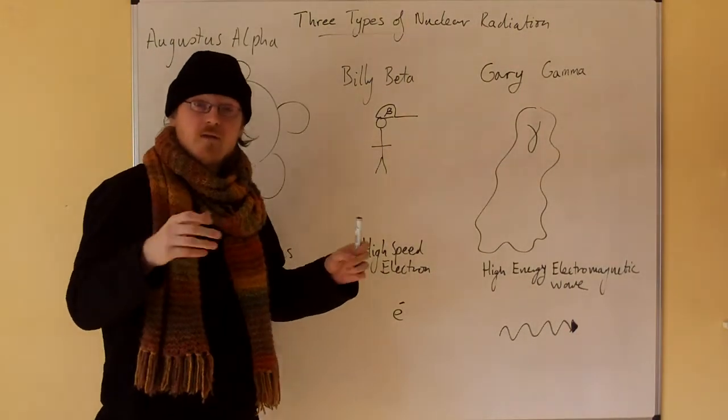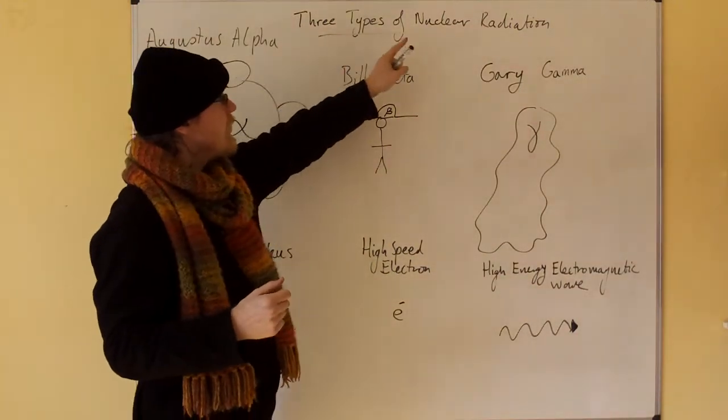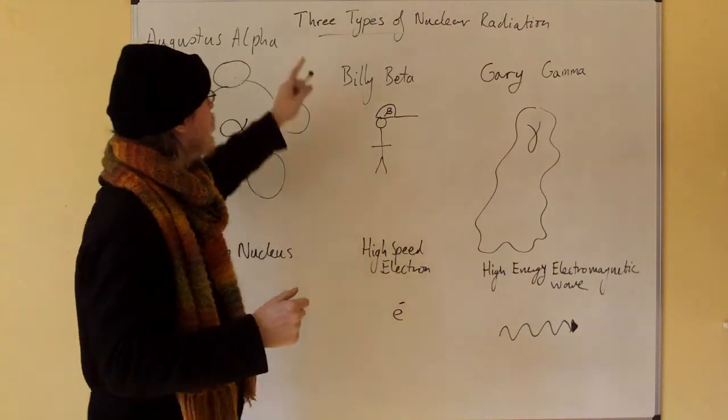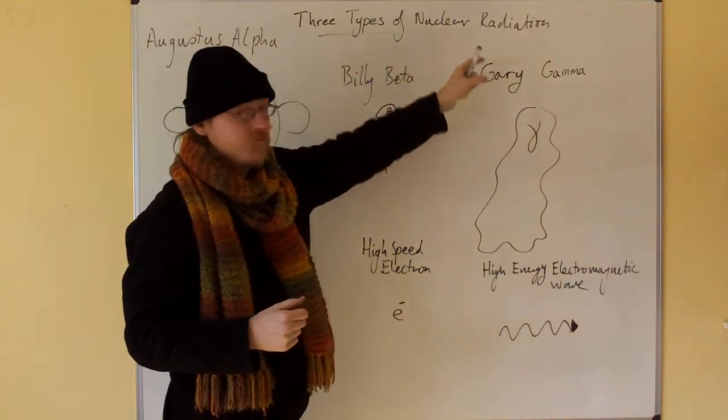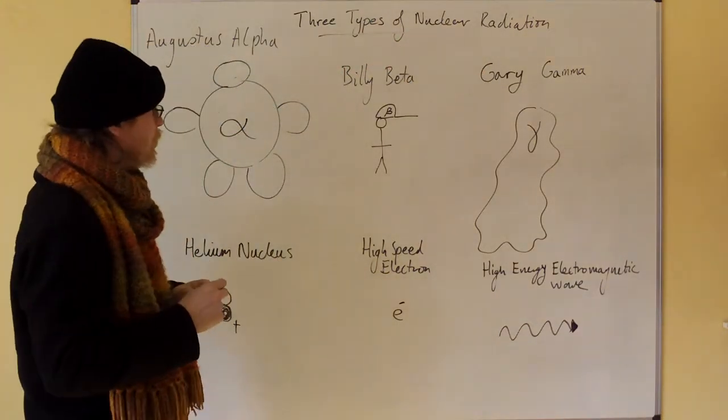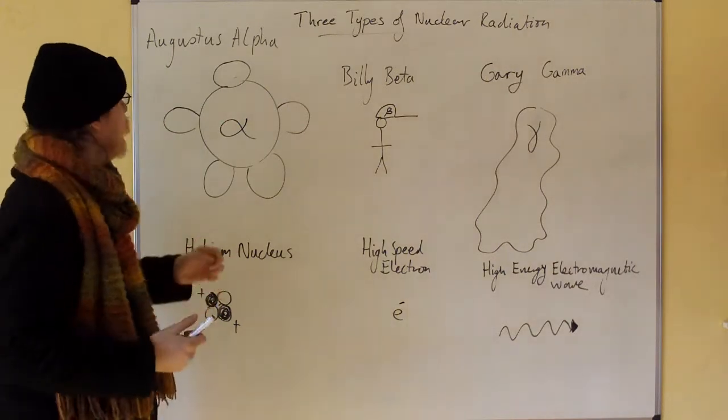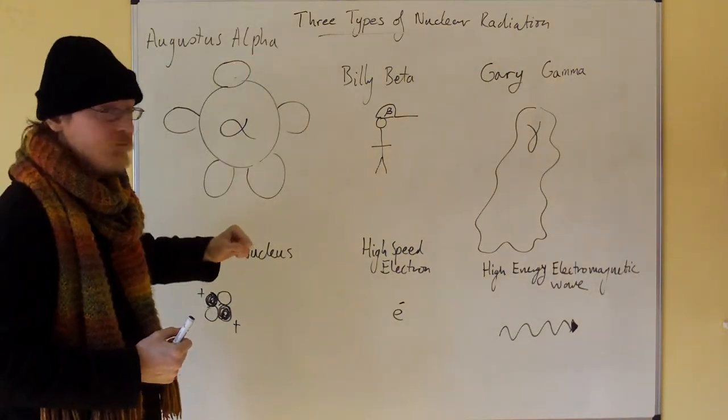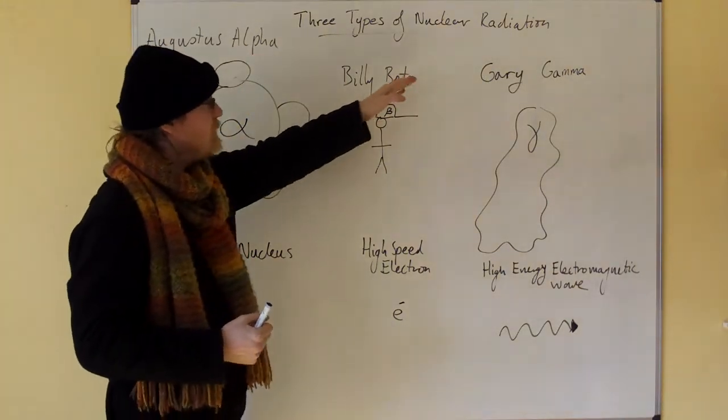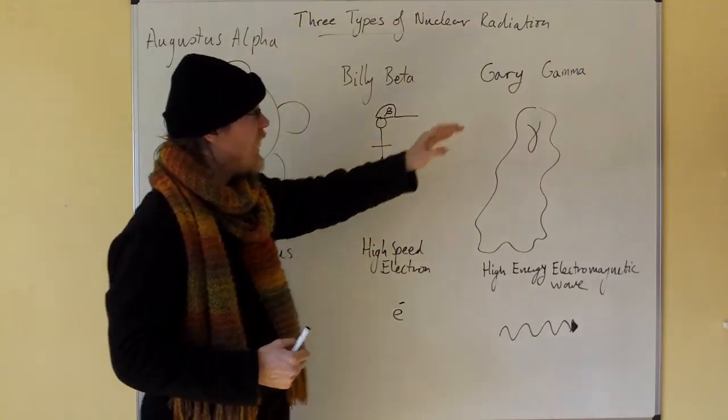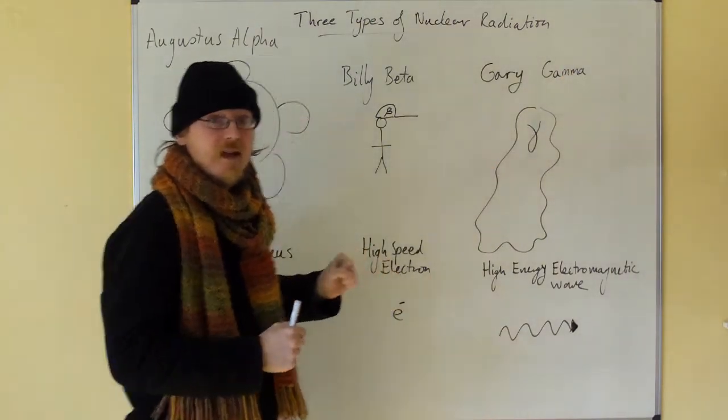Right, now we're going to talk about the three types of nuclear radiation. Now we remember them with Augustus Alpha, alpha radiation, Billy Beta, beta radiation, and Gary Gamma, gamma radiation.